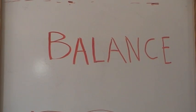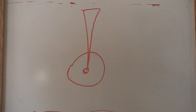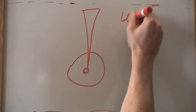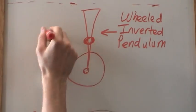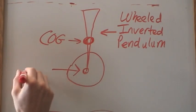First, we're going to discuss Rosie's ability to balance. The model that we used to balance Rosie was the wheeled inverted pendulum. The inverted pendulum has a center of gravity located over the axis of the wheel.